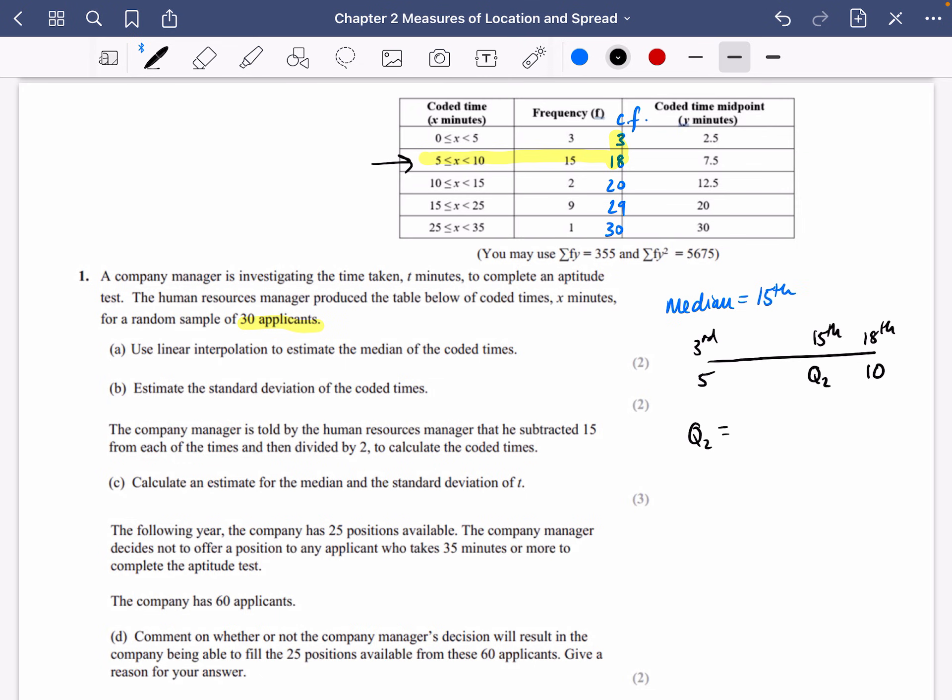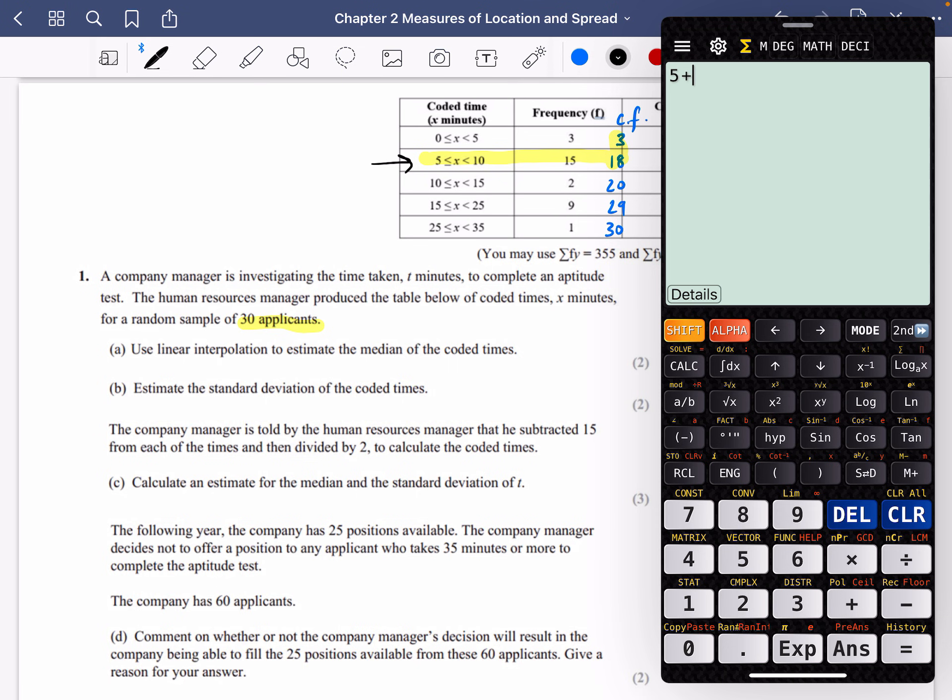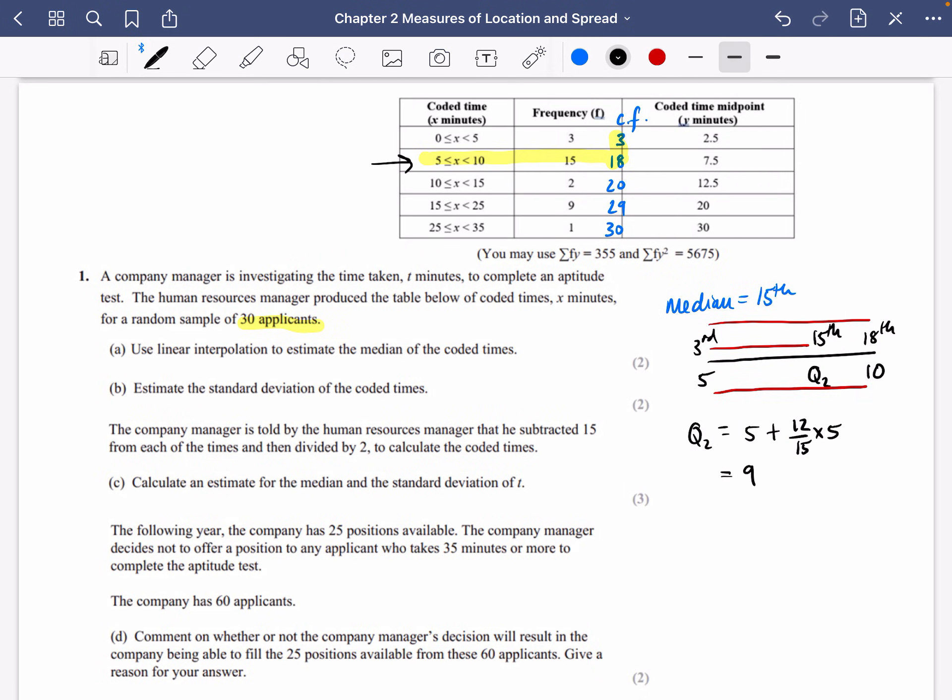So this is where we think that median is going to be. So the median Q2 is going to be 5 plus the fraction on the top. So that's 3 to 15 is 12 over 15. 5 plus 12 over 15 multiplied by how wide the bottom is. And the bottom is 5 wide from 5 to 10. So let's just quickly figure out what that is. So let's do 5 plus 12 15ths of 5. 5 plus 12 15ths of 5. 6 of 5 and we get 9. So an estimate for the median is going to be 9 minutes.